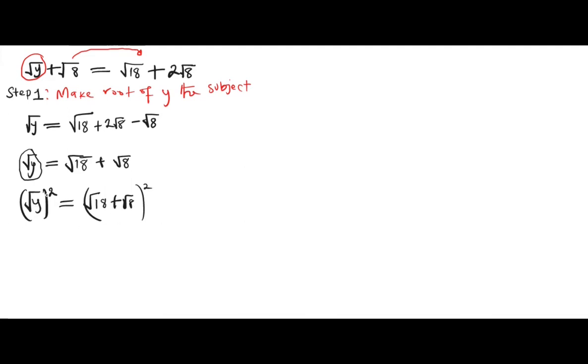For us to square this, let's consider this identity. We have (a + b)² = a² + b² + 2ab. So therefore, a in this case equals √18 and b equals √8.